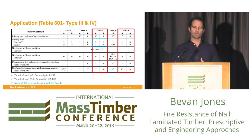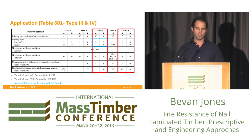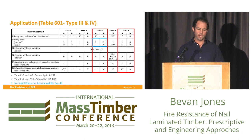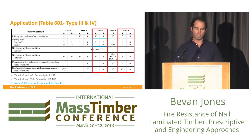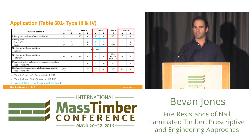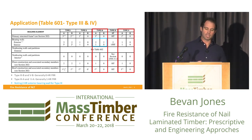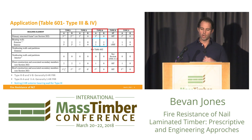You can also apply NLT in Type 3 and Type 5 construction types, analogous to light frame construction. Generally you require a zero-hour rating for 3B or 5B. For larger floor plate buildings you can apply NLT with a one-hour rating, which is when you start needing a one-hour rating for heavy timber construction. There's not a lot of resources or testing available to demonstrate a one-hour rating for NLT currently. There are also two-hour exterior wall provisions for bearing walls in Type 3A construction.